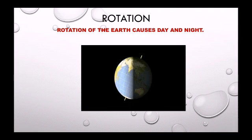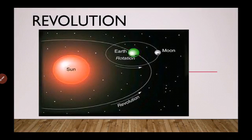So what is the meaning of rotation? When the Earth rotates on its axis, that is called rotation. The Earth takes 24 hours to complete one rotation.